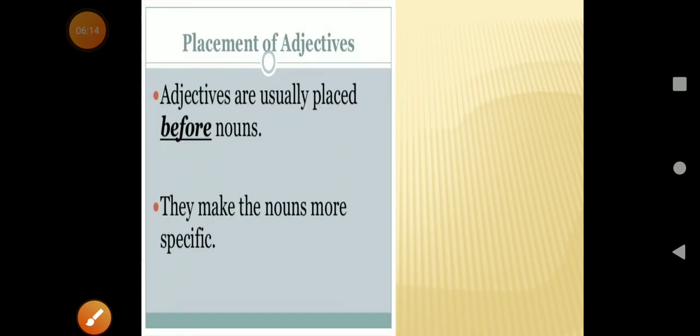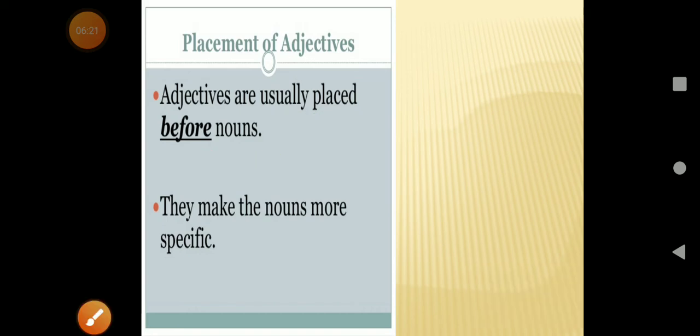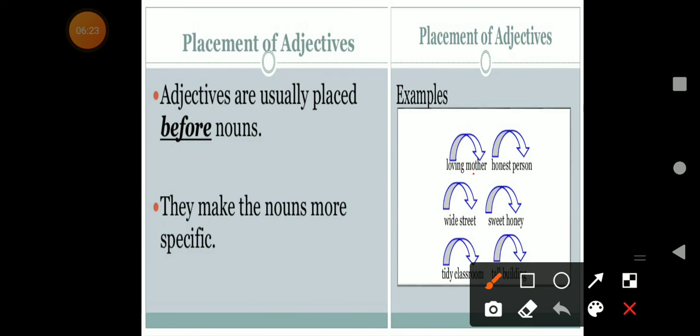Now placement. I have already told you that adjectives are usually placed before the nouns. And these are just nouns: mother, person, street, honey. These are nouns. They are loving, wide, honest, sweet. They are adjectives. So I have a simple line under noun and circle on the adjective.